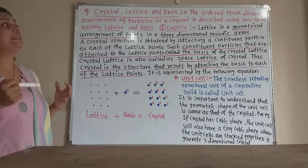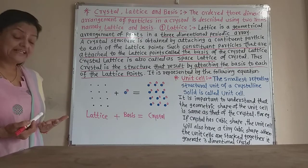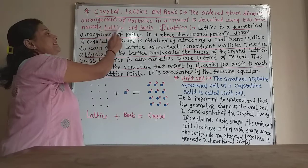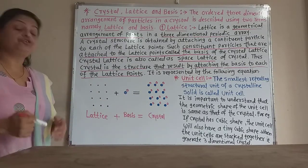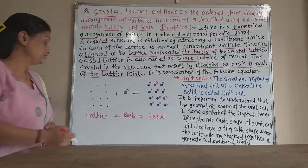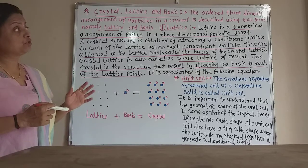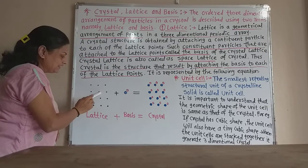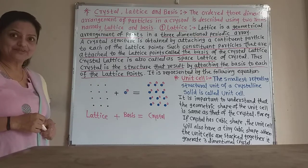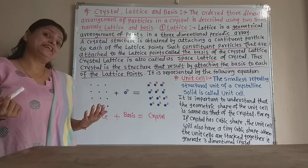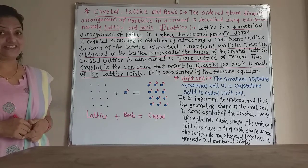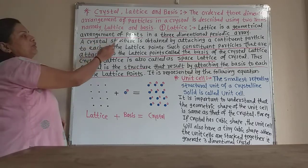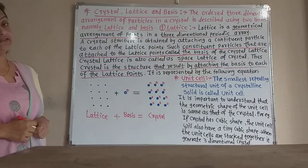The ordered three-dimensional arrangement of particles in a crystal is described using two terms: lattice and basis. The geometrical arrangement of points — here it is rectangular, sometimes it may be cubic, hexagonal, or tetragonal — is called the lattice. Lattice is the geometrical arrangement of points in a three-dimensional periodic array. A three-dimensional periodic array means a crystal, so the geometrical arrangement of points in the crystal is called the lattice.